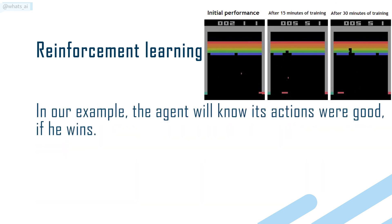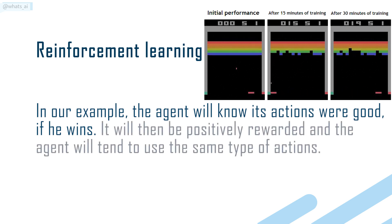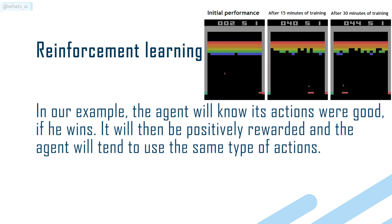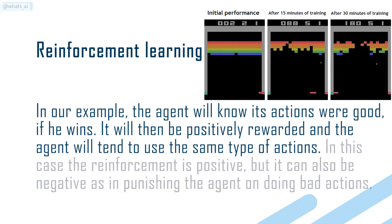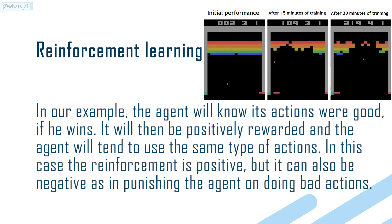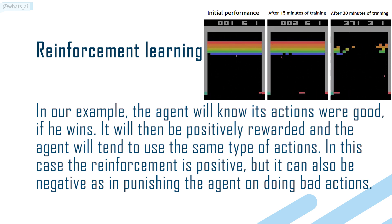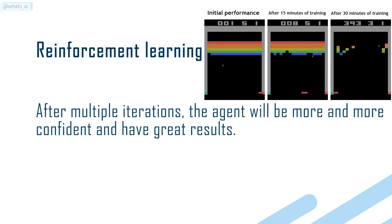The agent will know its actions were good if it wins. It will then be positively rewarded and the agent will tend to use the same type of actions. In this case the reinforcement is positive, but it can also be negative, as in punishing the agent for doing bad actions. After multiple iterations, the agent will be more and more confident and have great results.